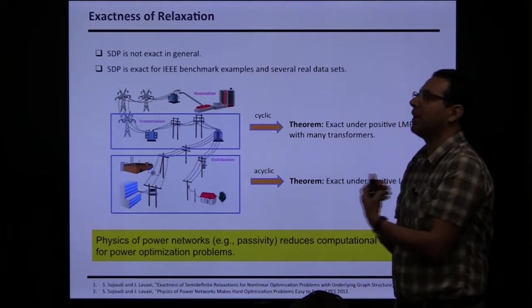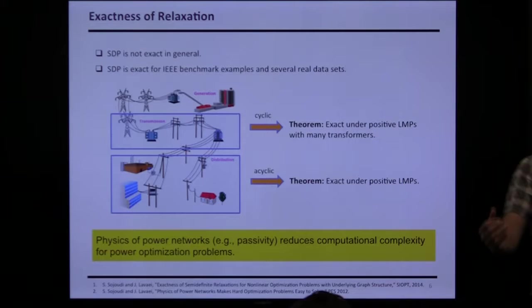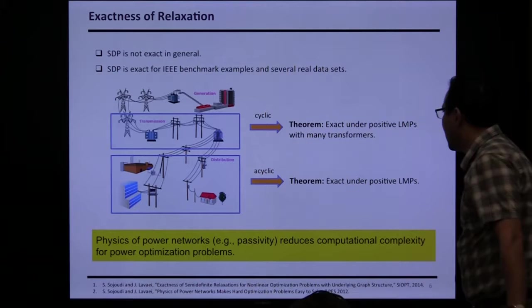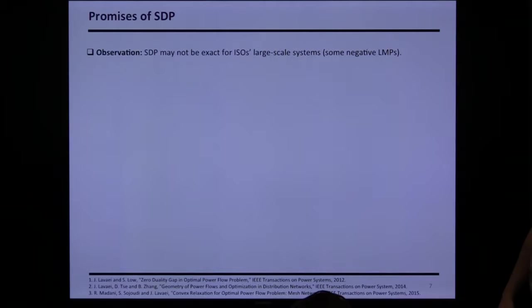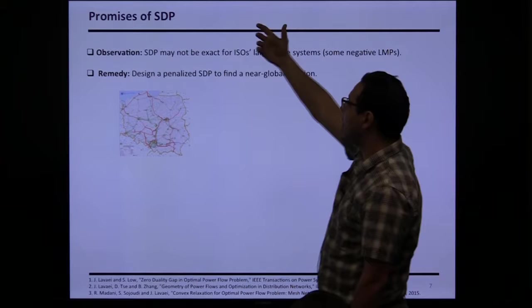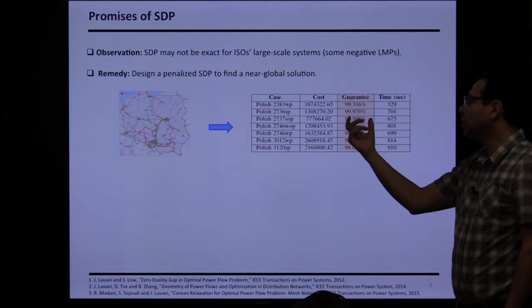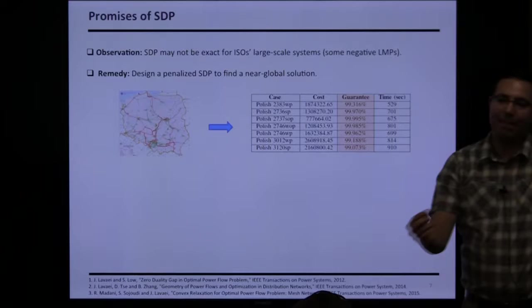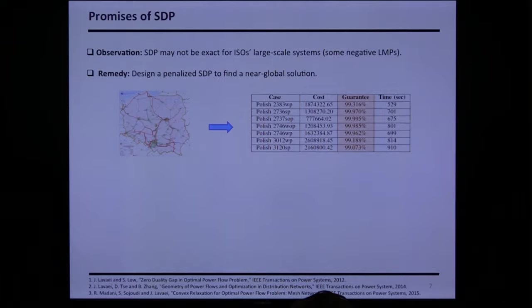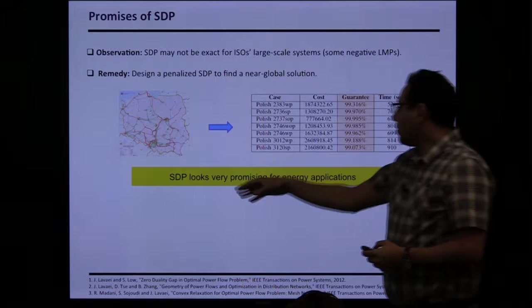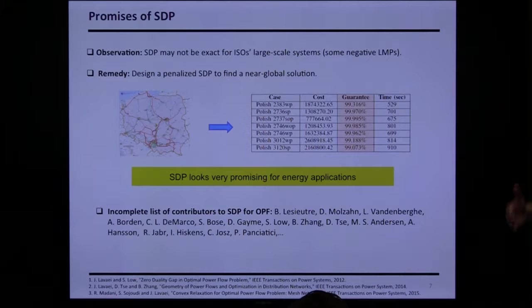Since you're constrained by a network, sometimes you're paid to withdraw power so that the laws of physics are satisfied. About 5% of prices may not be positive, and then SDP may not work. We got data for larger-scale systems like the European grid — SDP didn't work. So we came up with penalized SDP and tried it on different systems like the Polish grid. For each system we found a feasible solution with a global optimality guarantee of at least 99%.